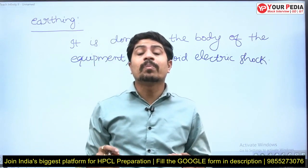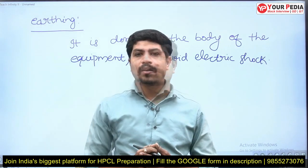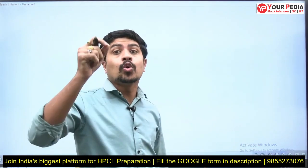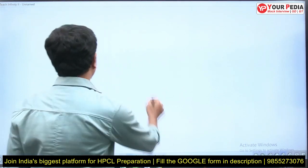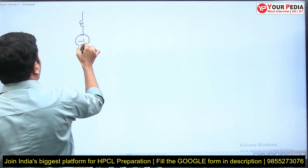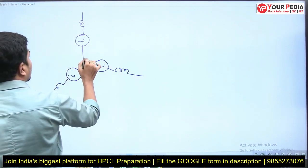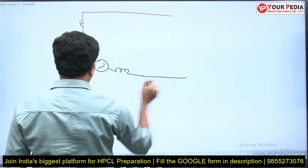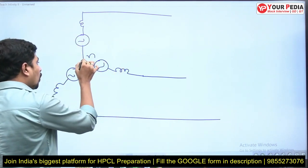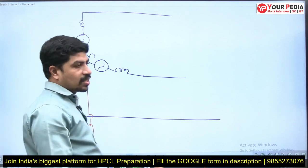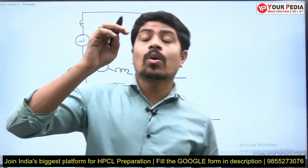Now let's understand what grounding is. Grounding is also connecting to the ground, but it specifically means connecting the neutral of the generator to the ground. I have a three-phase synchronous generator — this is the neutral of the generator. If we connect the neutral of the generator to the ground using either a resistance, reactance, Peterson coil, or solid grounding (where resistance equals zero), this process is called neutral grounding.